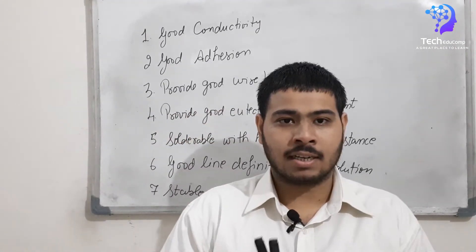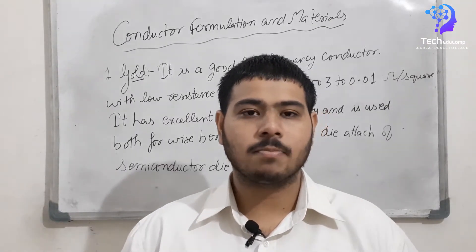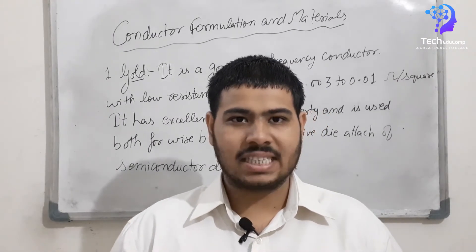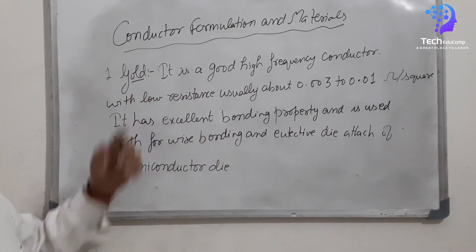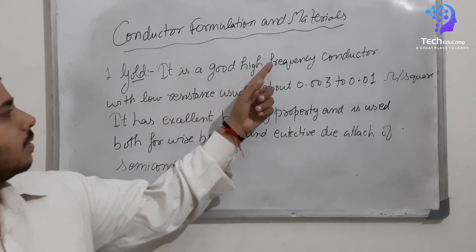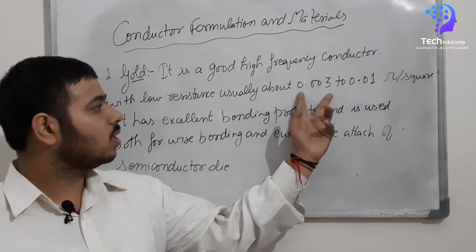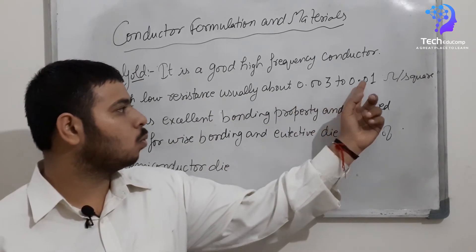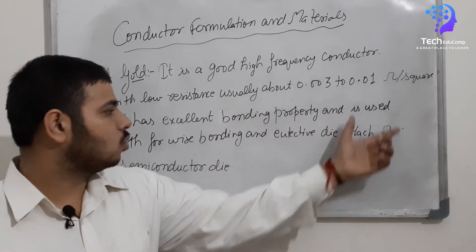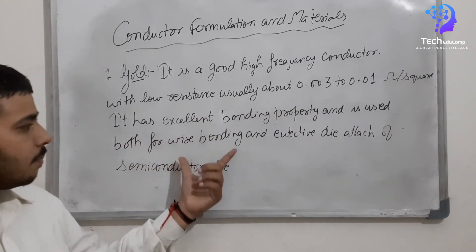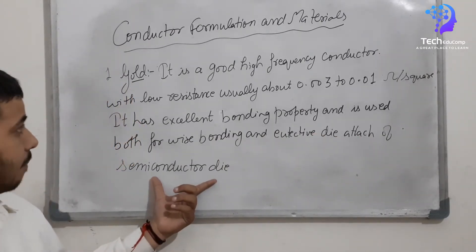Now let us talk about conductor materials and formulations. The conductor materials are small metallic particles, less than 5 micrometres. The first material is gold. Gold is a good high frequency conductor with low resistance, usually about 0.003 to 0.01 ohm per square. It has excellent bonding properties and is used both for wire bonding and eutectic die attachment of the semiconductor die.